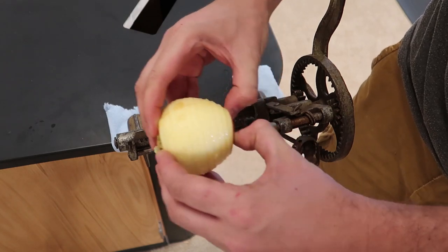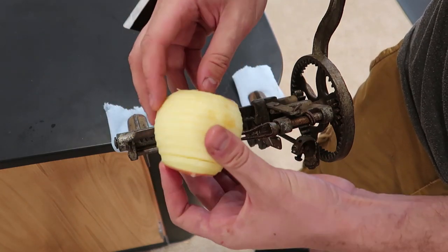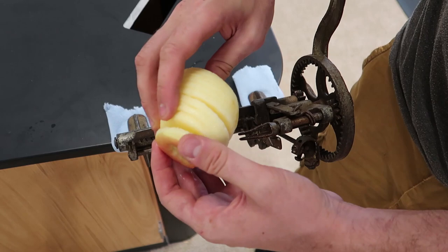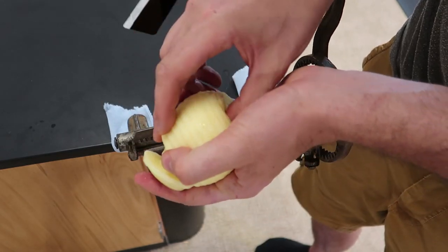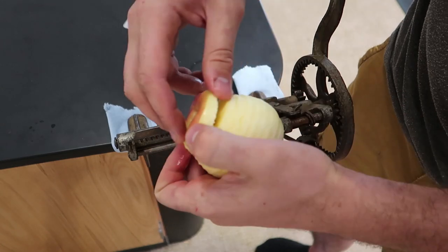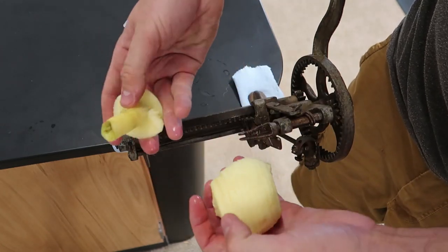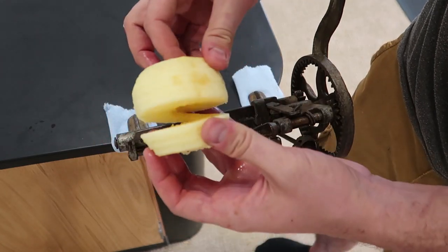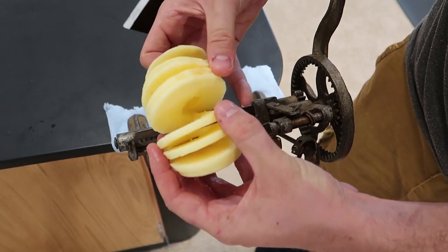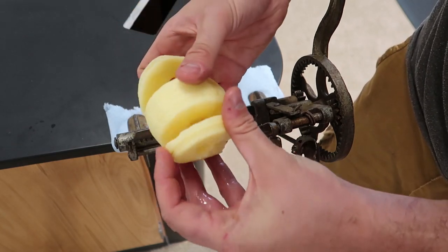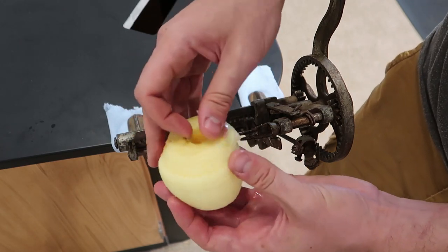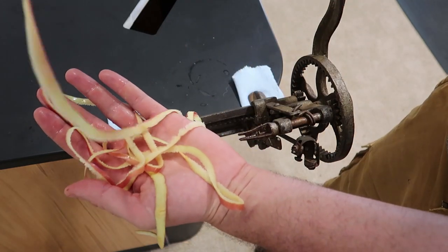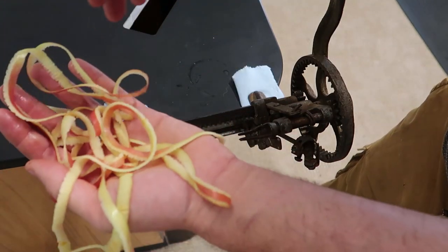That was my first time, so I was still learning. And check this out. It's actually a corer at the same time, too. Try to push it out. There you go. Boom. The core is out. And check this out. You have sliced up apple. This is so cool. So that way it's even easier to eat it. And it's all one peel. Can you believe it? So tiny.